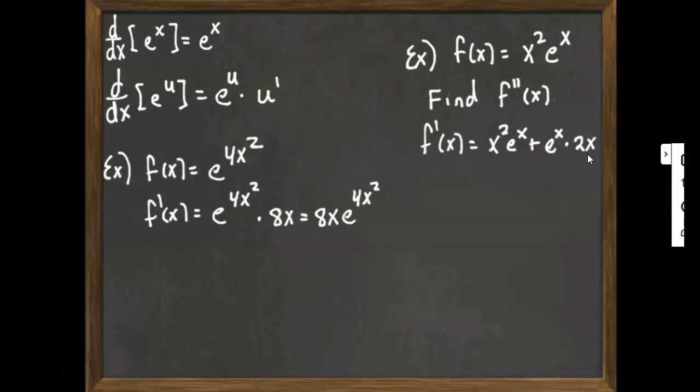But if I kept going from here, I'd have to use the product rule on x squared and e to the x, and on 2x and e to the x. So what we often find ourselves doing with e to the x is we can factor it out as a common factor. And now when I do the derivative the second time, I can get by with using the product rule only one time.